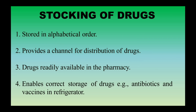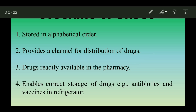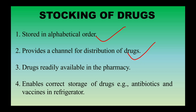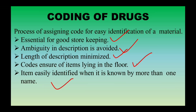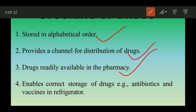Now let's talk about the stocking of the drug. Stocking means how the drug is to be stored. Drugs should be stored in alphabetical order — for example, if you need Acyclovir, you go to the specific rack and can easily retrieve the medicine. Stocking provides a channel for distribution of drugs and ensures drugs are readily available in the pharmacy. It also enables correct storage — for example, antibiotics and vaccines must be kept in the refrigerator.